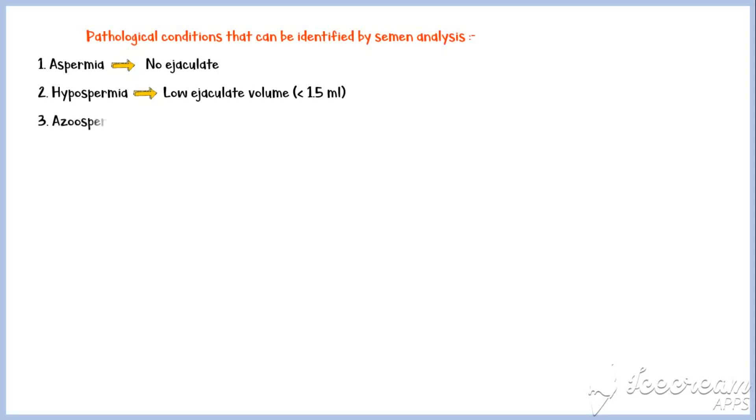Finally, let's see what are the pathological conditions that can be identified by semen analysis. Aspermia, where there is no ejaculate when masturbated. Hypospermia, or low ejaculate volume, usually less than 1.5 milliliters. Azoospermia, or no sperm in the ejaculate.